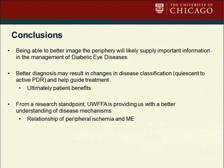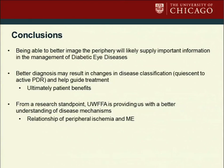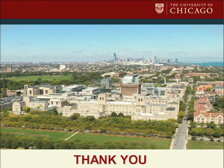Being able to better image the periphery will likely supply important information in the management of diabetic eye diseases. Better diagnosis may result in changes in disease classification from quiescent to PDR and really help guide treatment and ultimately help our patients. From a research standpoint, ultra-wide-field fluorescein angiography is providing us with a better understanding of disease mechanisms, and we're really understanding the relationship of peripheral ischemia and macular edema. Thank you so much for your attention.